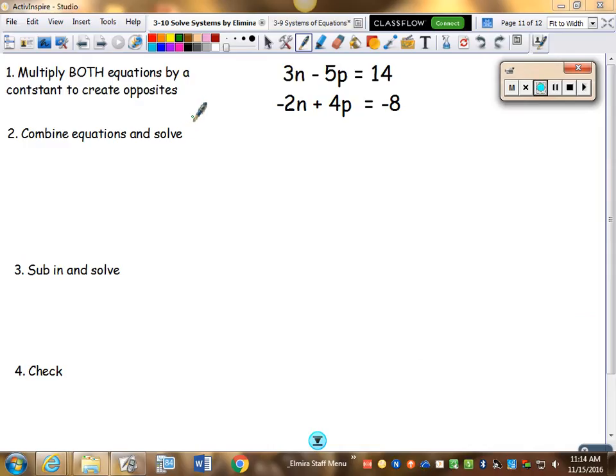The hardest level of this is when I can't make a 2 into a 3 and I can't make a 4 into a 5. So just taking one equation and multiplying it won't work. I'm going to have to multiply both equations by something. Here's what I recommend. I know I'm going to have to multiply both equations. Pick a variable, either the n or the p. I'm going to pick the n. I tend to go smaller numbers because smaller numbers are easier to do.